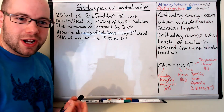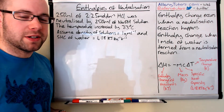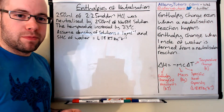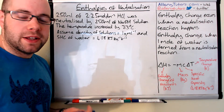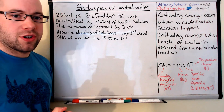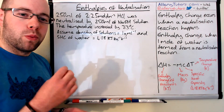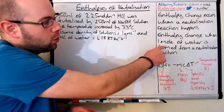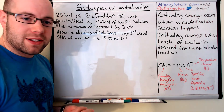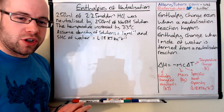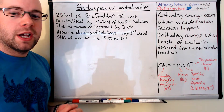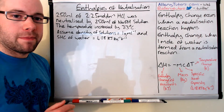An enthalpy change occurs when we neutralise an acid and an alkali and we produce water. The definition of enthalpy change of neutralisation is the enthalpy change when one mole of water is formed from a neutralisation reaction. That one mole of water is really, really important, as you'll see in a minute when we come to the example.